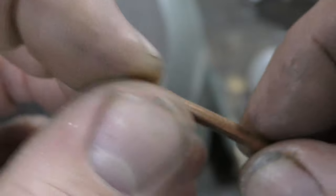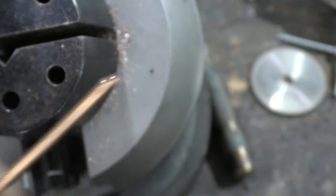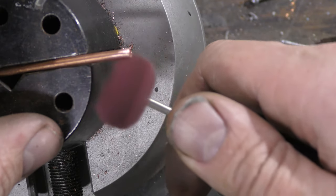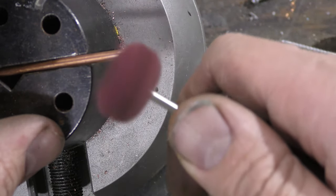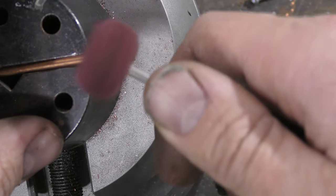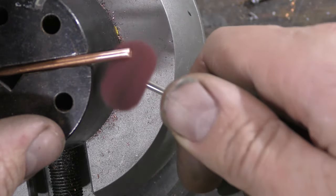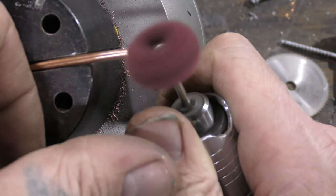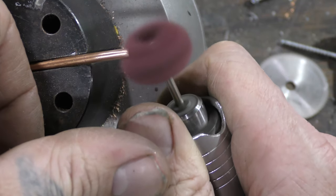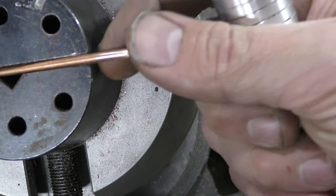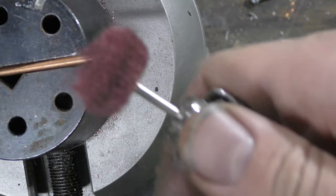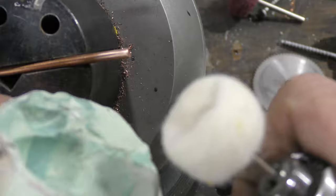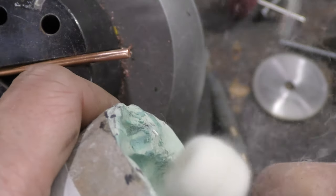Alright, now we have to polish it. Okay, so there's a preliminary polish. Now, you can use whatever rubbing compound you want for this.